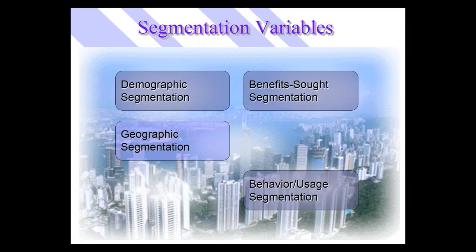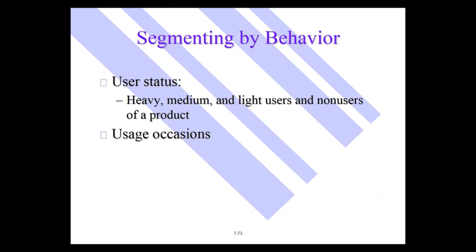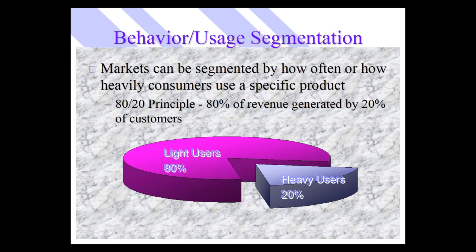Another segmentation variable is behavioral segmentation or usage segmentation — this gets at how people use a product. The so-called 80-20 rule is in effect in many places: 20% of purchasers often account for 80% of product sales. So you want to go after the so-called heavy users. Marketers often break users up into heavy users, medium users, light users, and non-users.